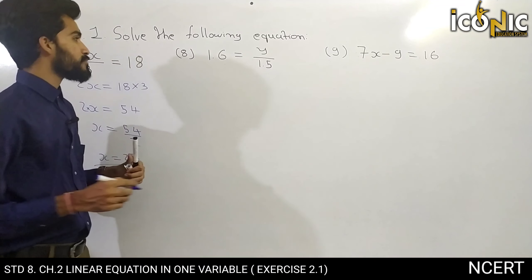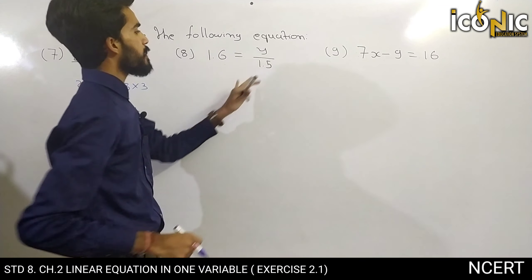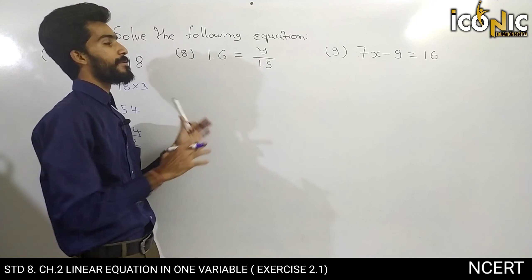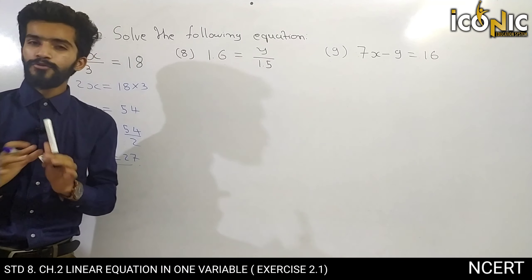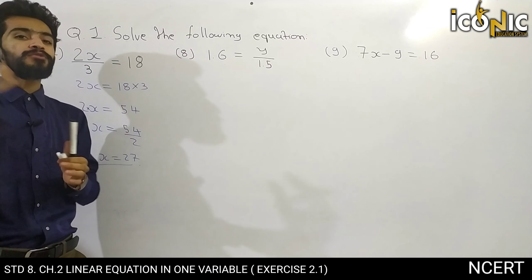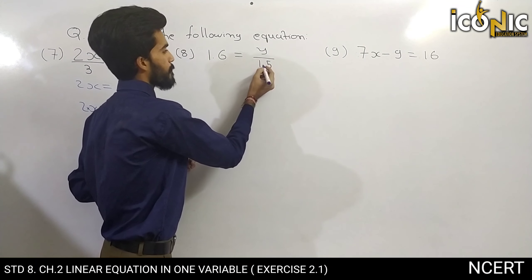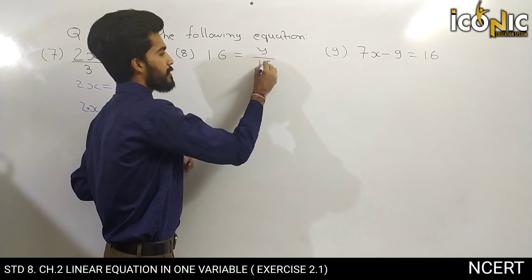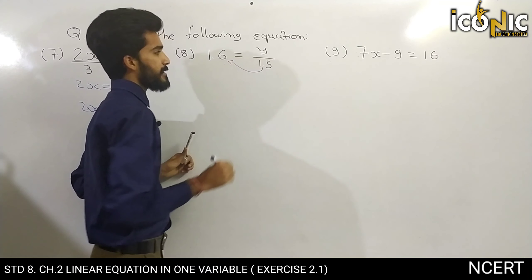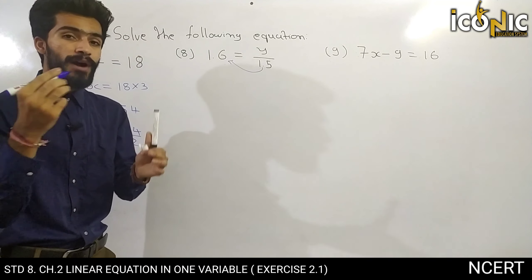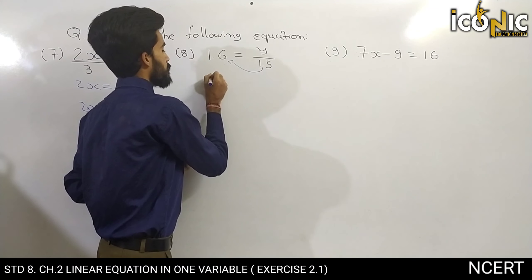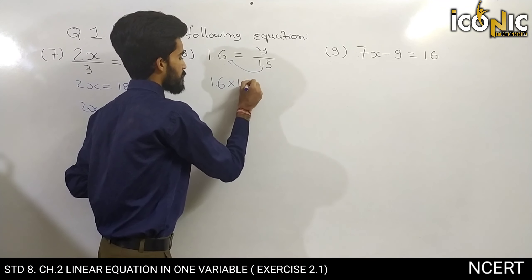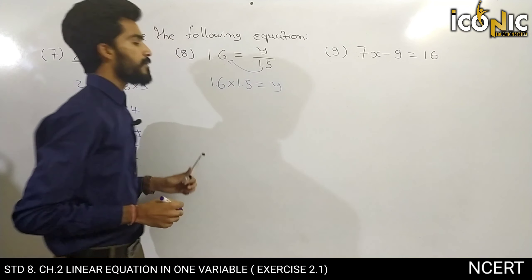That completes the 7th solution. Now in question 8, there is a decimal — don't be confused. We will ignore the decimal point for a moment. Here y divided by 1.5 is equal to some value, so we need y. We move 1.5 to the other side: division becomes multiplication. So 1.6 into 1.5 is equal to y.